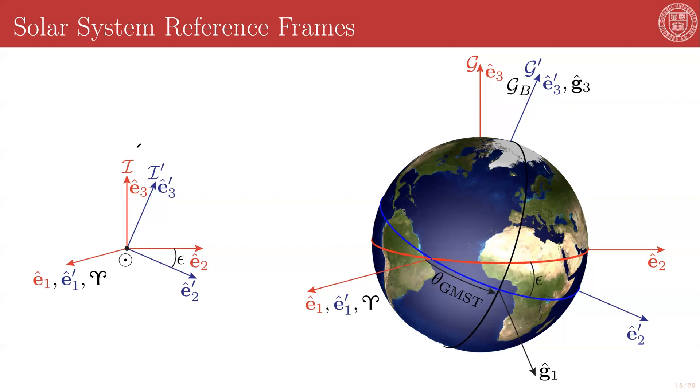So all of these i, i prime, g, and g prime are used in different contexts as inertial frames. g and g prime are anchored to the center of the Earth but they are not rotating with the Earth and so they are useful as inertial frames for Earth orbiting spacecraft. Once you get away from the Earth then you have to go to a heliocentric reference frame or a barycentric reference frame which has the same basic unit vector definitions but is anchored to the center of mass of the whole solar system.